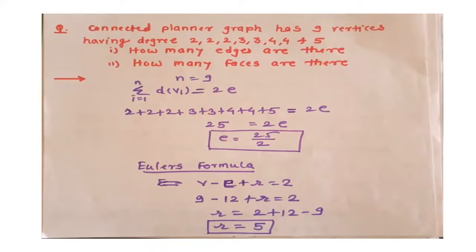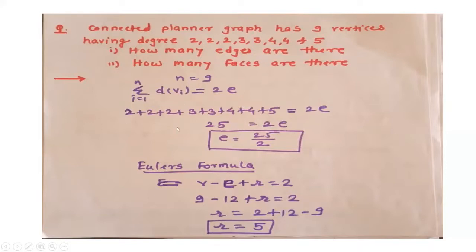Here n equals 9. Whenever degrees are given for vertices, we use the handshaking lemma. The sum of degrees of all vertices equals twice the number of edges. So the summation of degrees of all 9 vertices is 2 + 2 + 2 + 3 + 3 + 4 + 4 + 5, which equals 25. So 25 equals 2e, giving e equals 25/2, approximately 12.